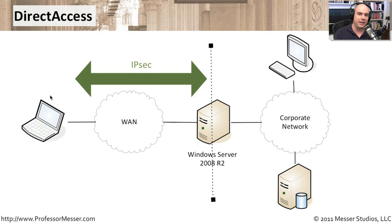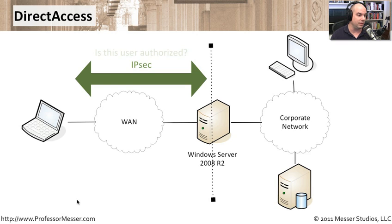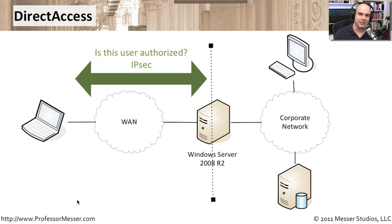IP-HTTPS as a last chance is a very good fallback because it runs over port 443 using standard HTTPS protocols — things most internet-connected links understand. Once it connects using one of those methods, it sets up an IPsec tunnel. IPsec stands for IP Security and is a standardized way to communicate securely between devices over the network. Then a check is performed: is this user authorized to communicate via direct access? If they are, direct access is set up and they have access to the corporate environment.